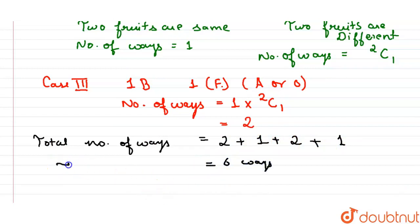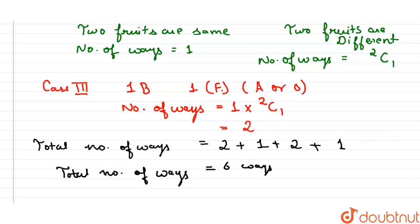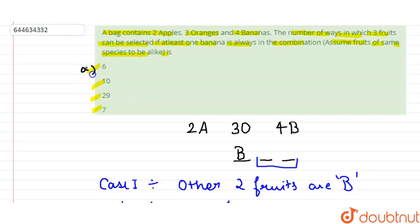Okay, so total number of ways are 6 ways. So our option A is the correct answer. Thank you.